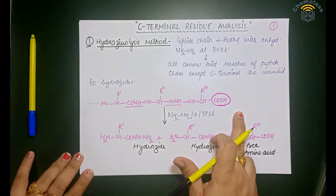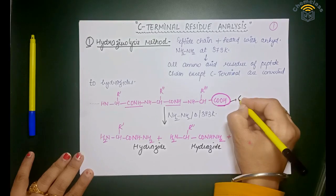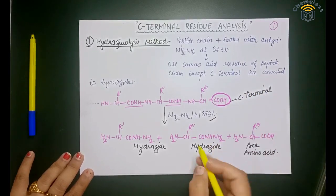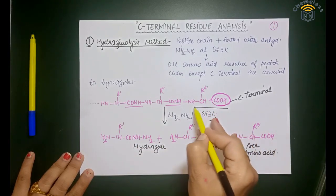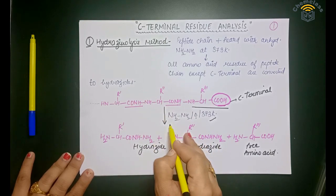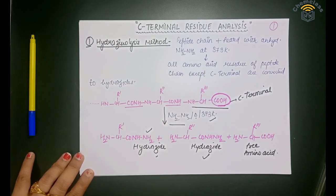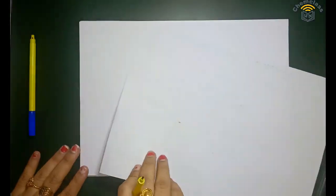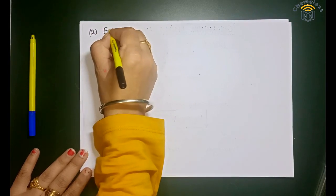So in this long peptide chain with COOH at the C-terminal, you treat with hydrazine at 373 Kelvin. All the peptide linkages get broken and react with hydrazine, and we get hydrazides of amino acids. That completes the first method. Now for the second method — the enzymatic method.